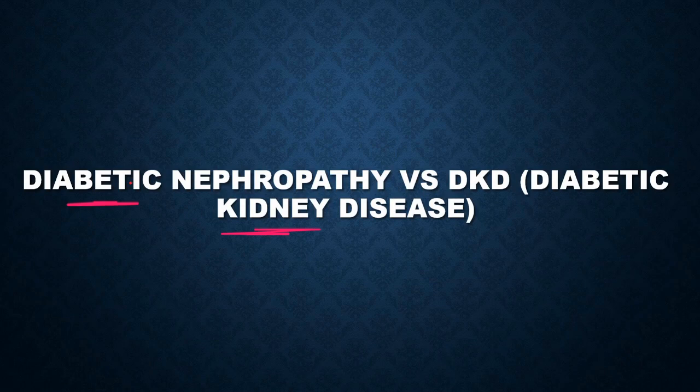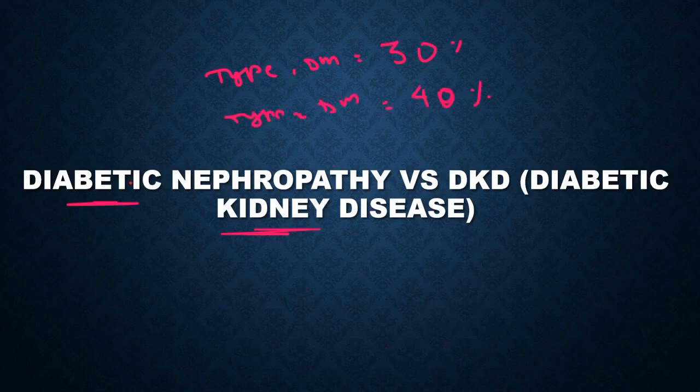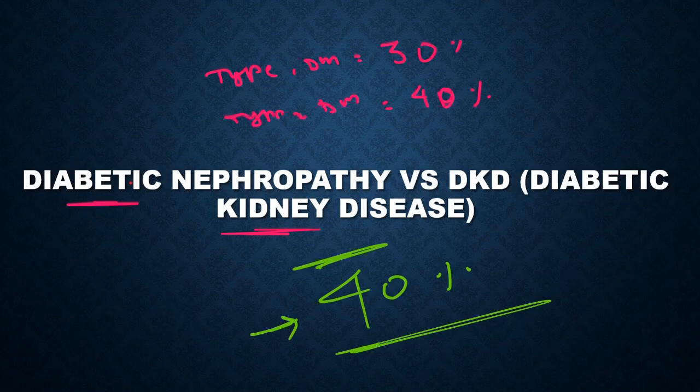The incidence of diabetic nephropathy, or diabetic kidney disease, in diabetes is about 30% in type 1 diabetics and about 40% in type 2 diabetes. Grossly, we can remember that the incidence of diabetic kidney disease is about 40% among the diabetic population.